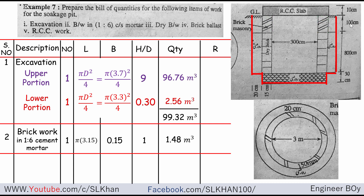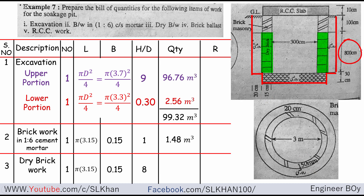Item number three is dry brickwork. The diameter for dry brickwork is the same as for the 1:6 cement brickwork — the wall circumference and diameter are the same for both types of brickwork. So: one item, pi times 3.15 for the circumference, breadth of 0.15 m, times height of 8 m (800 cm). Multiplying these gives the dry brickwork quantity of 11.87 cubic meters.